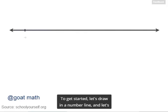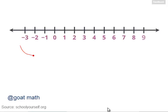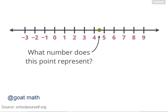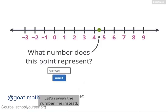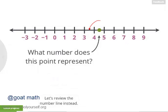Let's draw a number line and mark off the integers from negative 3 up through positive 9. Take a look at this point over here — what number does it represent? If you're not sure, click down here to review. This point is halfway between 4 and 5, so it's about 4.5.